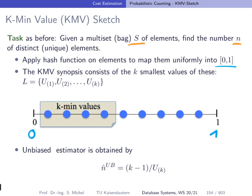The illustration shows the interval from 0 to 1. The KMV sketch or synopsis consists of the k smallest of these hash values. So the smallest hash value we call u1, the second smallest u2, and the k smallest uK.